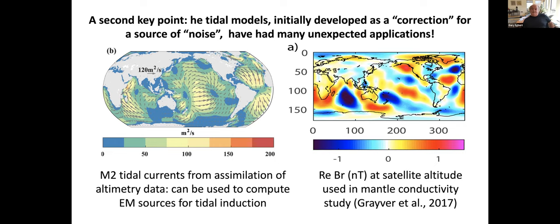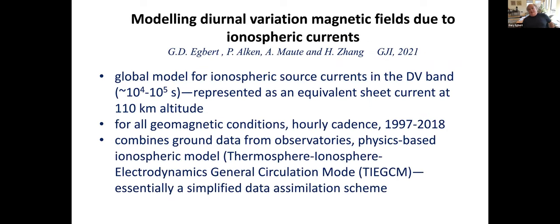A side product of the tidal model is tidal currents in the ocean, which you can combine with the earth's magnetic field to generate the motional induction source fields for tidal induction. This is an example of the radial component of the magnetic field at satellite altitude, used in a mantle conductivity study by Alexander Grayver and colleagues — something never imagined when we started developing tidal models. I want to use these ideas in modeling diurnal variations of magnetic fields due to ionospheric currents to improve induction studies.